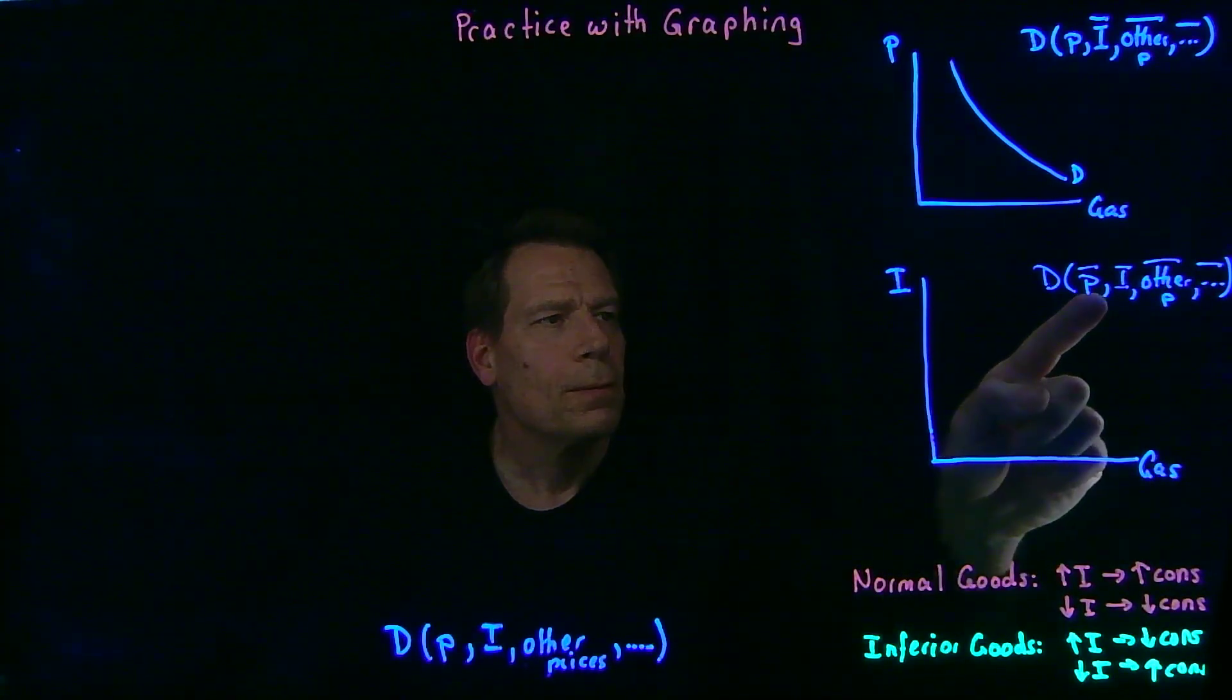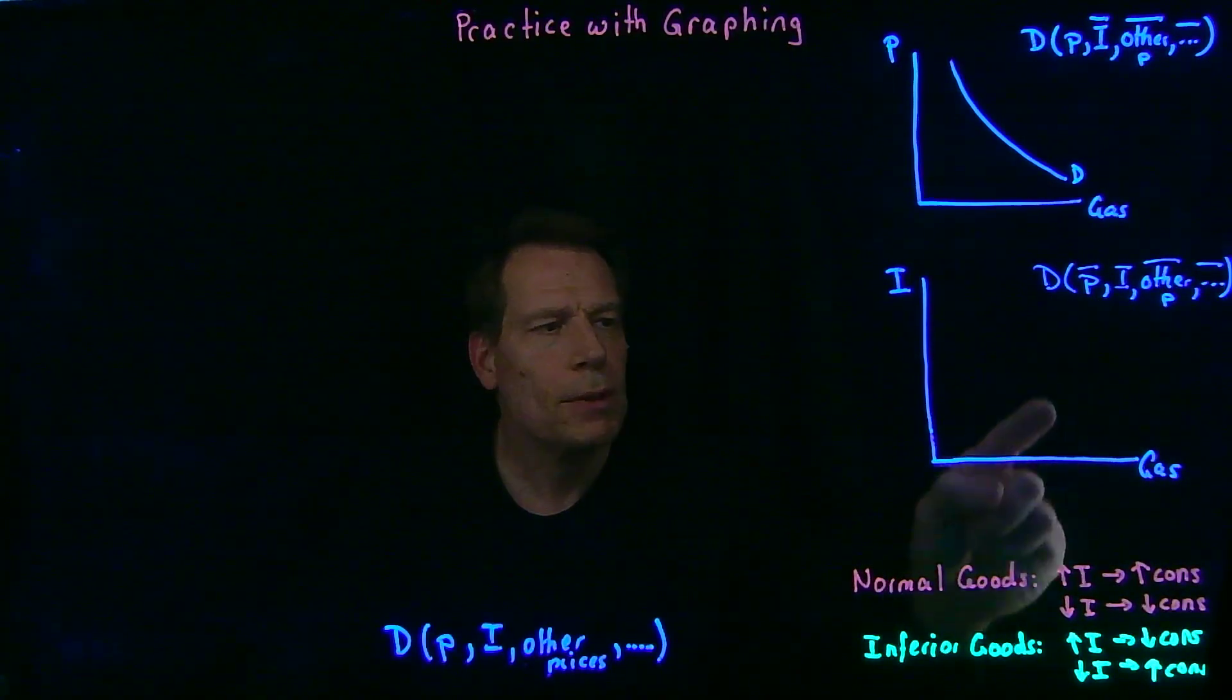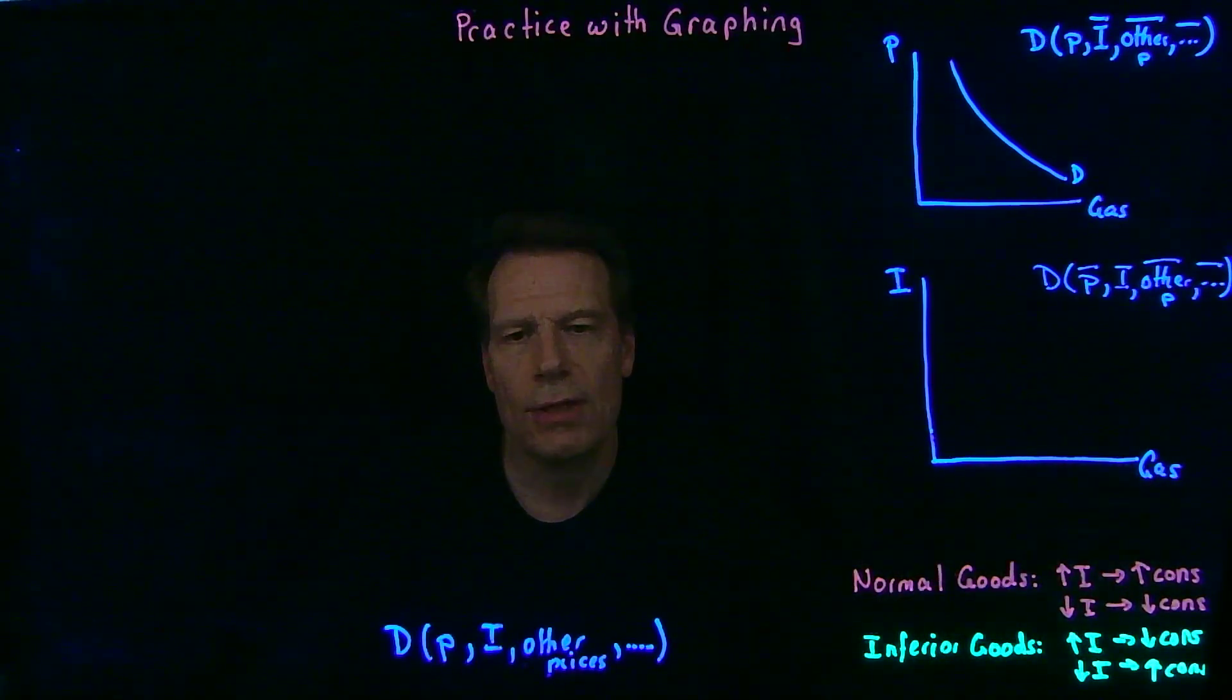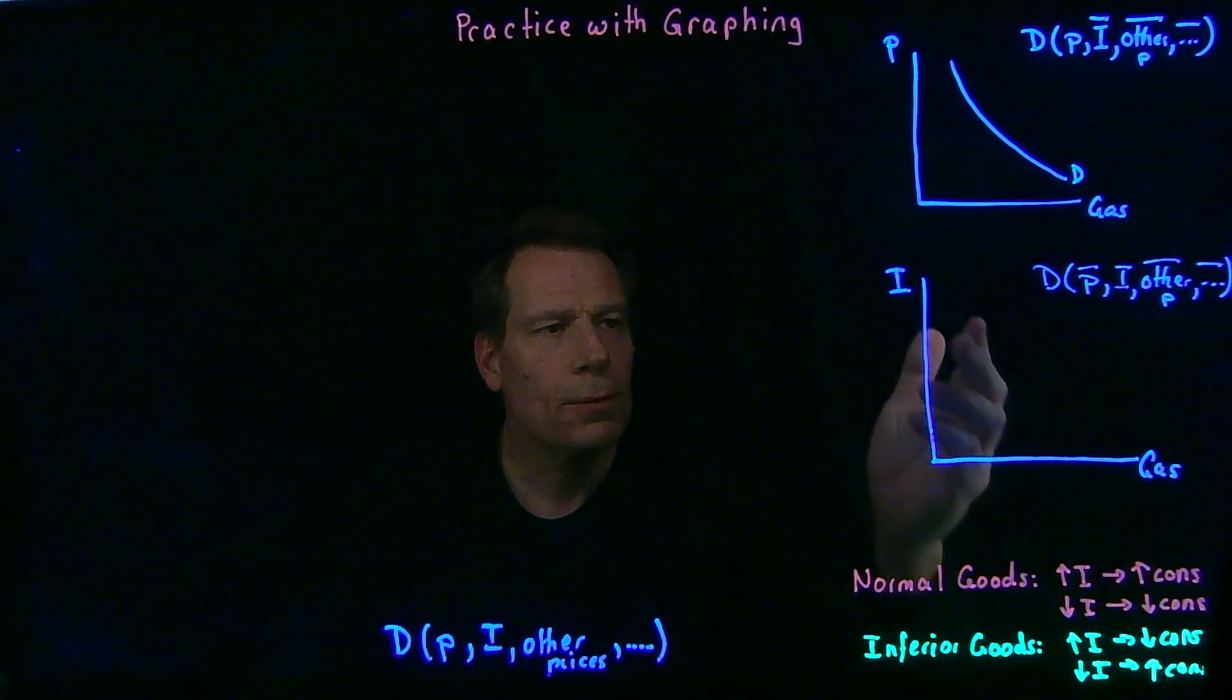So now, we let income vary, and we want to see how does the quantity you demand of gasoline change as income changes. What will that curve look like?